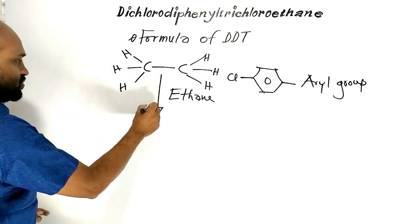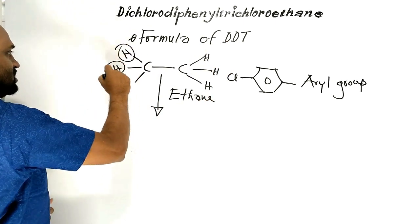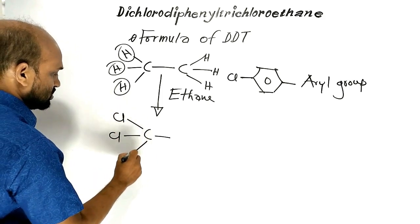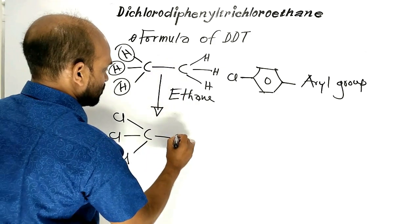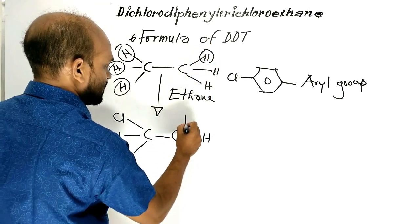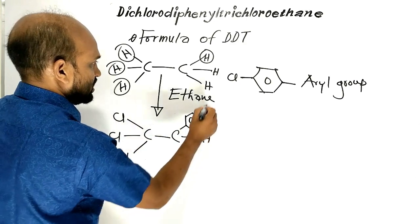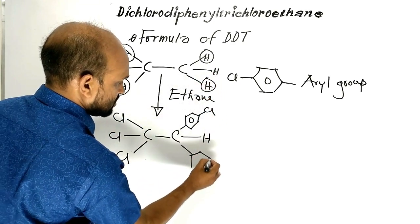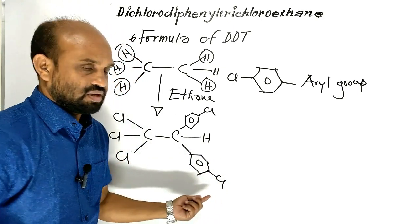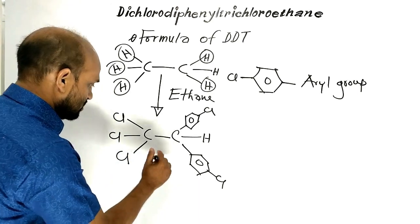Now from ethane, DDT is obtained in this way. The three hydrogen atoms of this carbon are replaced by three chlorine atoms. And from this carbon, one hydrogen is replaced by a chlorophenyl group, and this hydrogen is replaced by another chlorophenyl group.